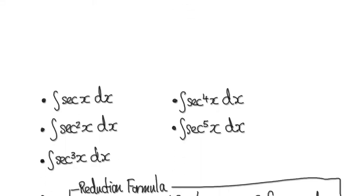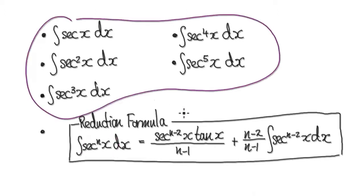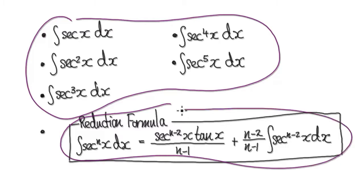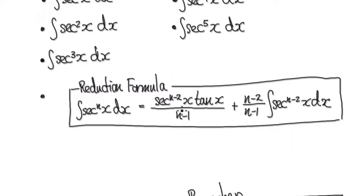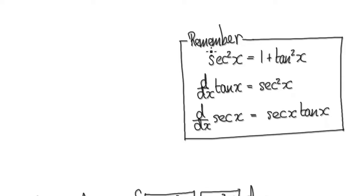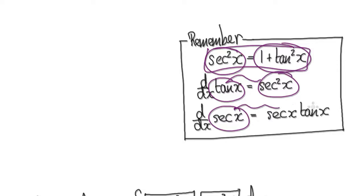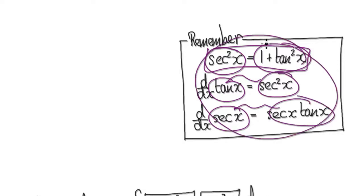In this video, we're going to derive the reduction formula for secant to the power of n. We've done all of these in the past, and now we're going to derive this formula. But before we do that, I require you to know these by heart: know that secant squared equals this, that when you differentiate tan it gives you this, and when you differentiate secant of x it gives you this. I require you to know this by heart.